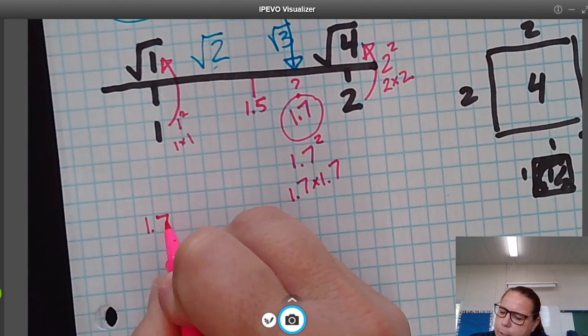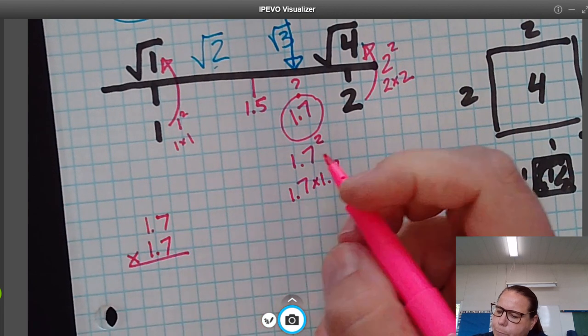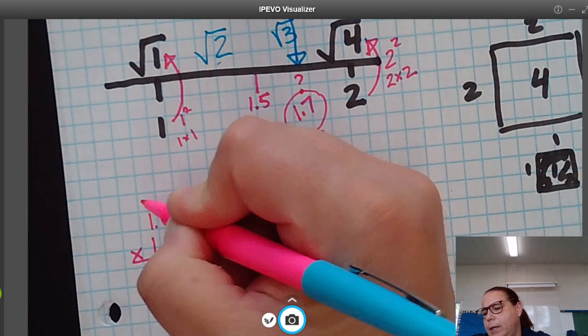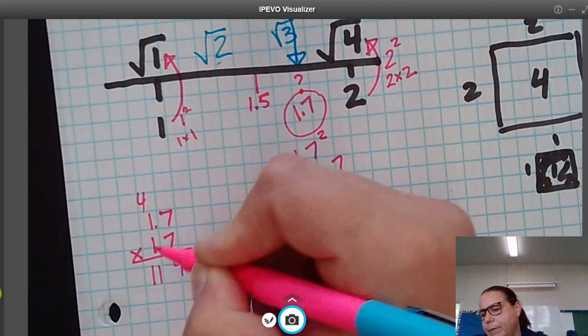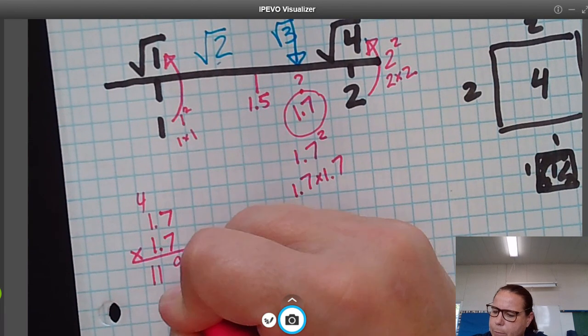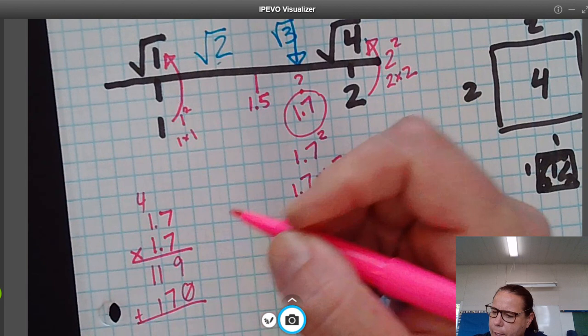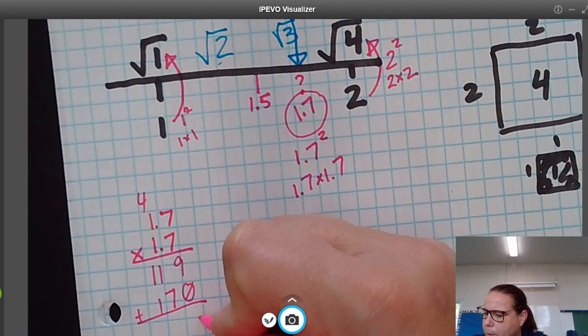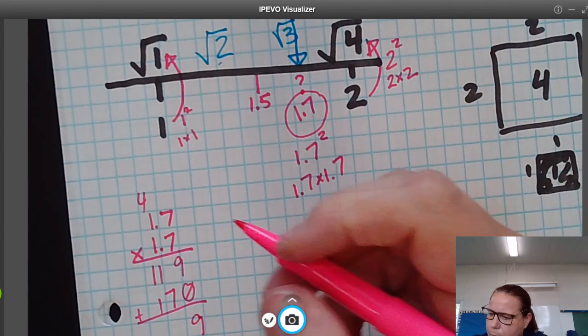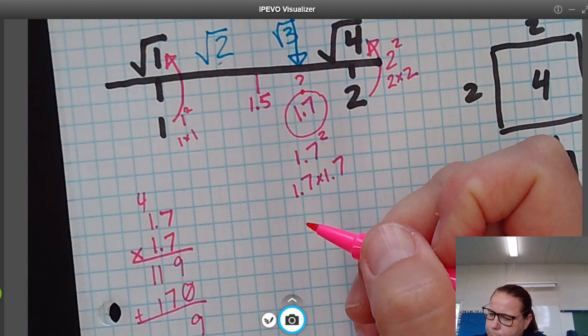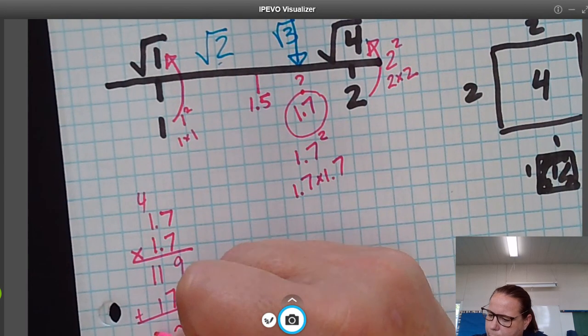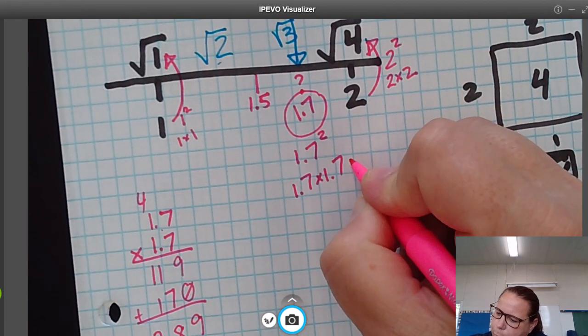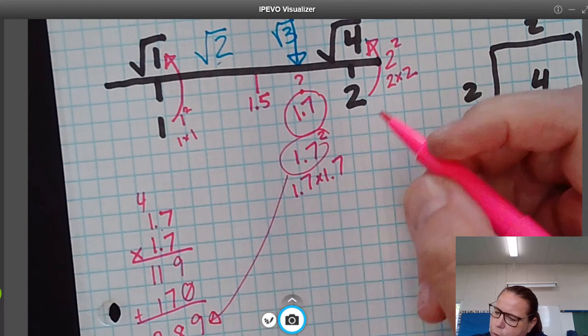When we take 1.7 times 1.7, this is going to be 49, carry the 4, 7, that's 11, placeholder, and 1 times 7 is 7 and 1. Then we're going to add that up. And 9, and that is 8 and 2. And there's two decimal places, so that means 1.7 squared, or 1.7 times 1.7 is 2.89.